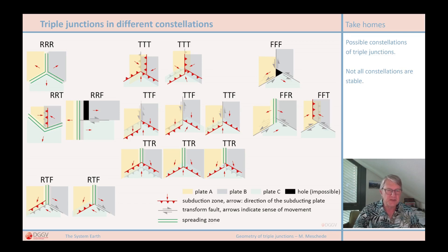Here in the middle, in the third row, three different possibilities for a TTR triple junction. TTR means trench-trench-ridge, two subduction zones and a mid-oceanic ridge. If the direction of the two subduction zones is the same as in the left two TTR triple junctions, the triple junction remains.